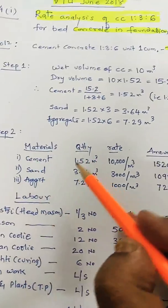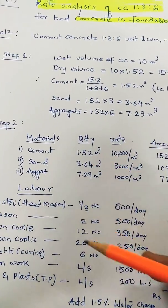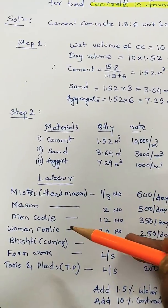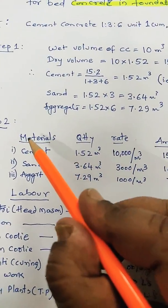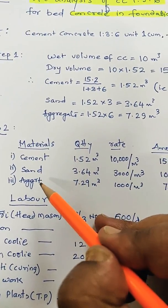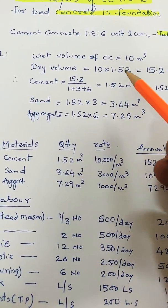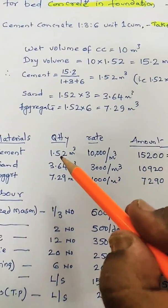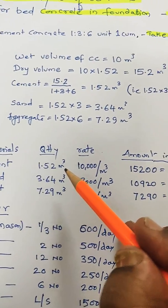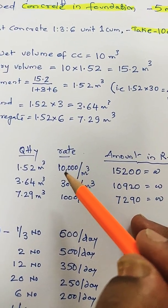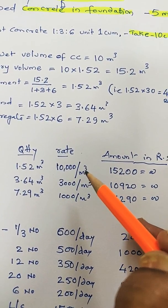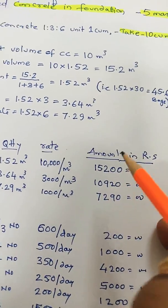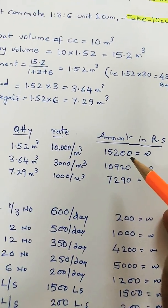Second step: Now we have to tabulate the cost of materials and labor. Materials like cement, sand, aggregate—quantity we have calculated here. I have taken the present rates: 1.52 cubic meters, the rate is 10,000 per cubic meter for cement, it amounts to 15,200 rupees.